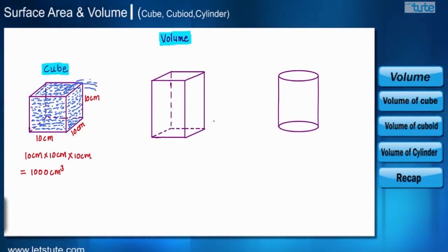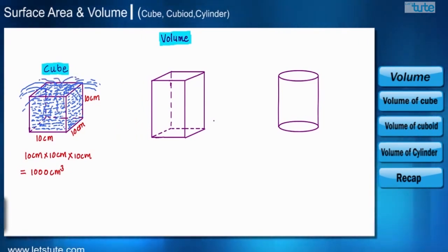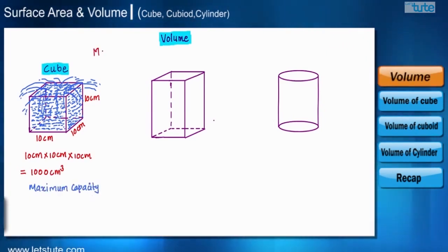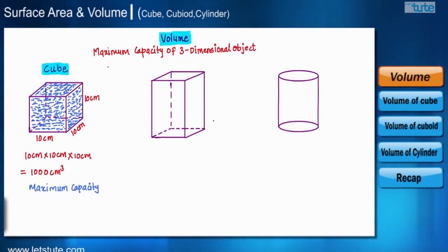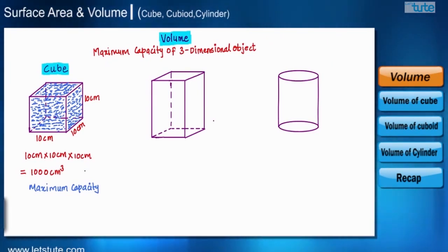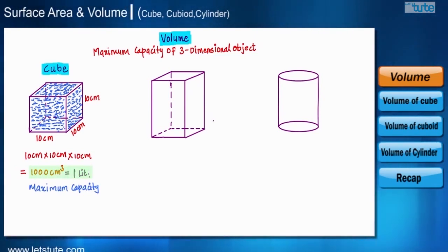If we add more water to this container, it will spread out — meaning the maximum capacity is 1000 cubic centimeter only. The capacity of any three-dimensional container is called the volume of that container. Liquid is most often measured in liters, and 1000 centimeter cubed equals 1 liter, so the volume of this cubic container with 10 cm sides is 1000 cm³ or 1 liter.